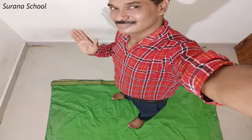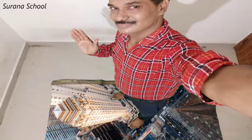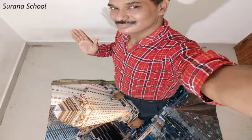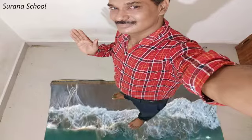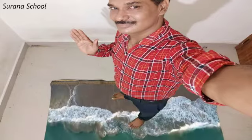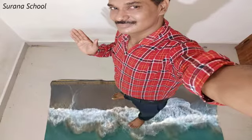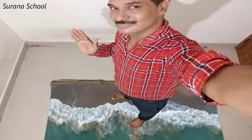These are some of the examples of green screen effects. Standing at the top of a building, it is slowly changing to a beach, and the beach is now changing to a fire.